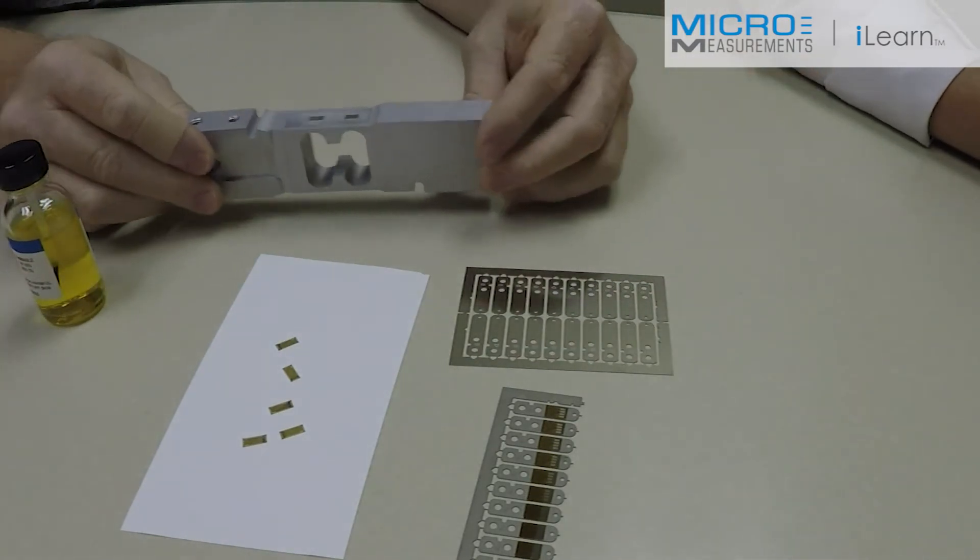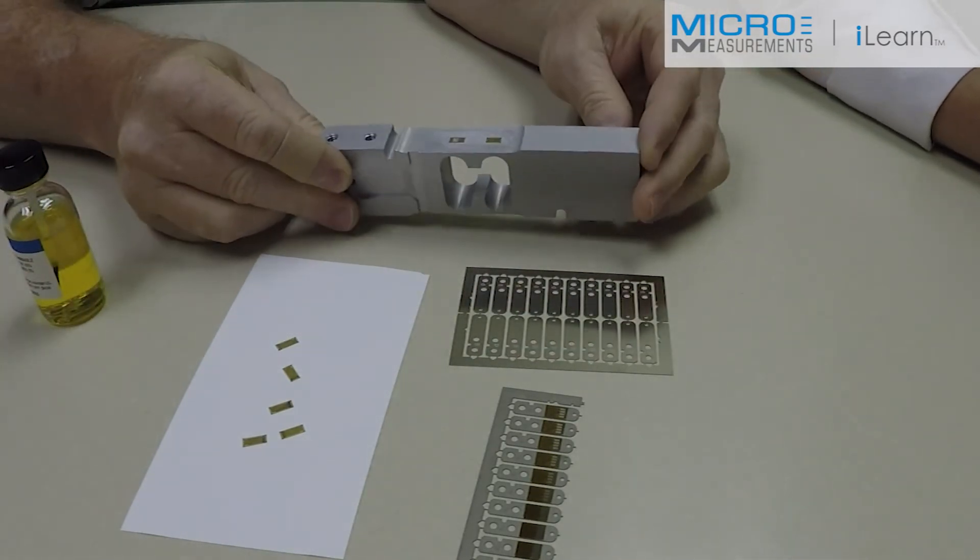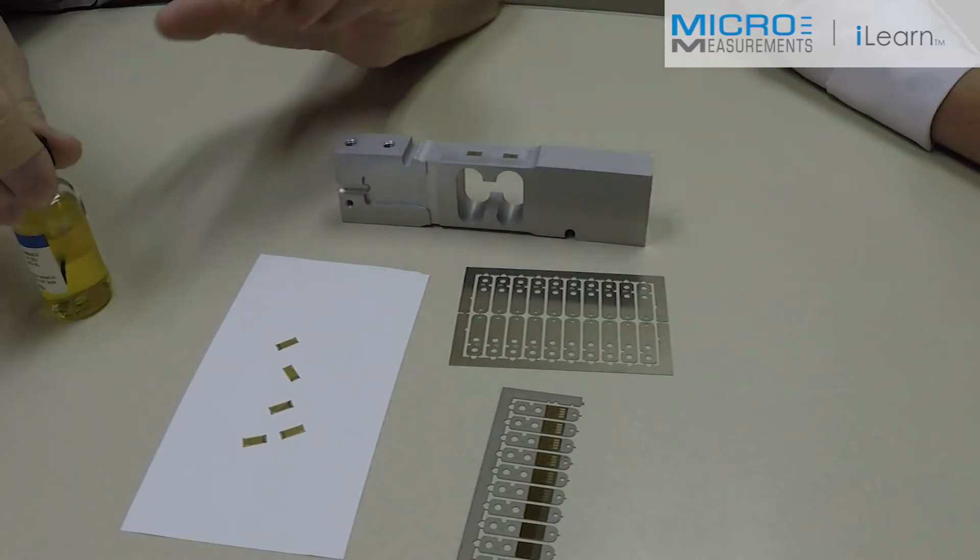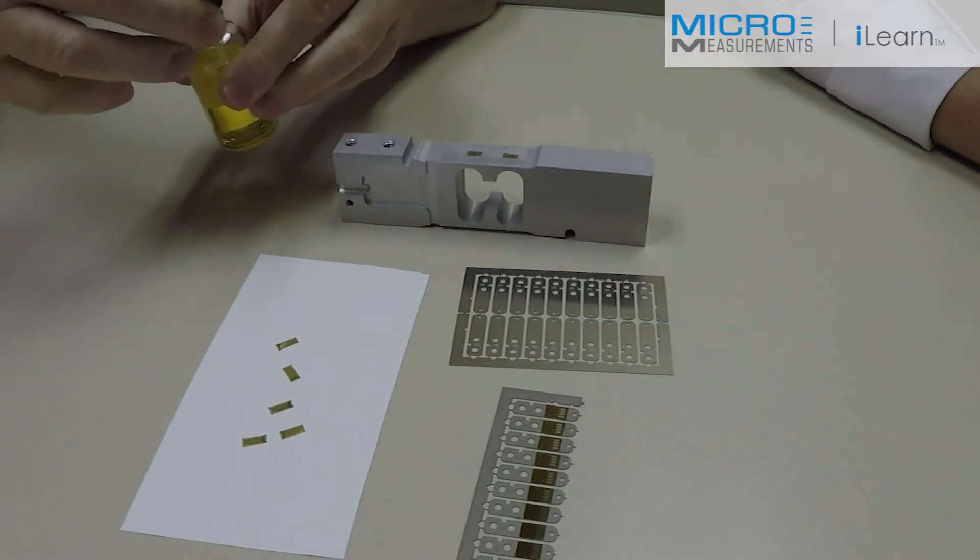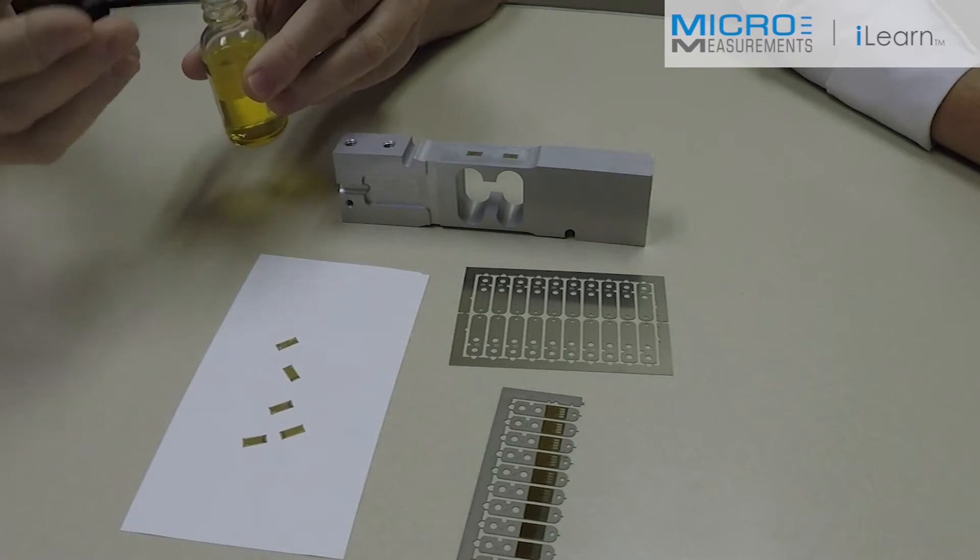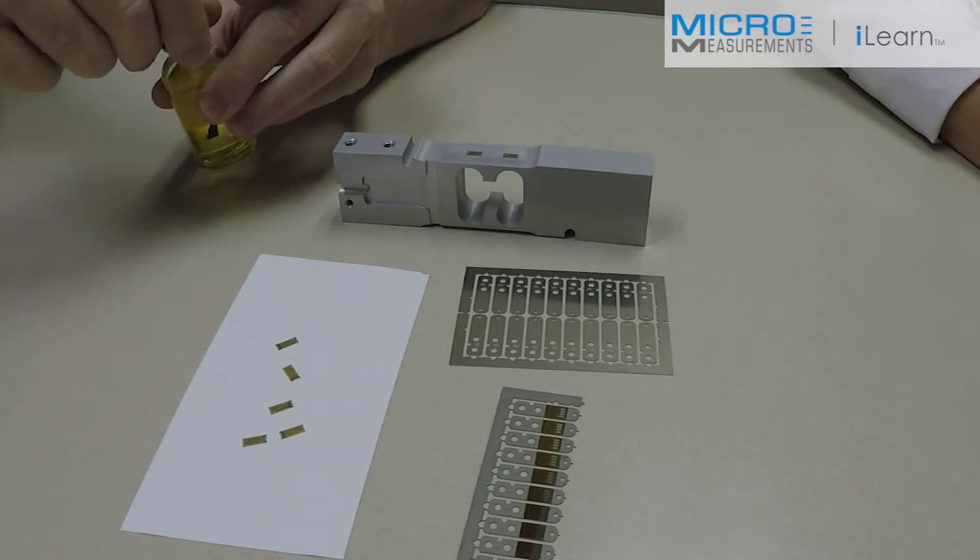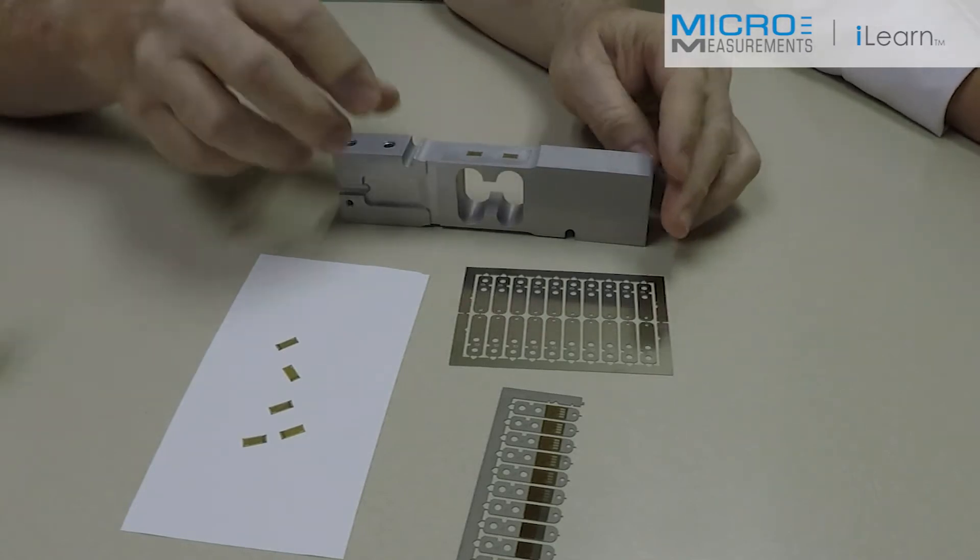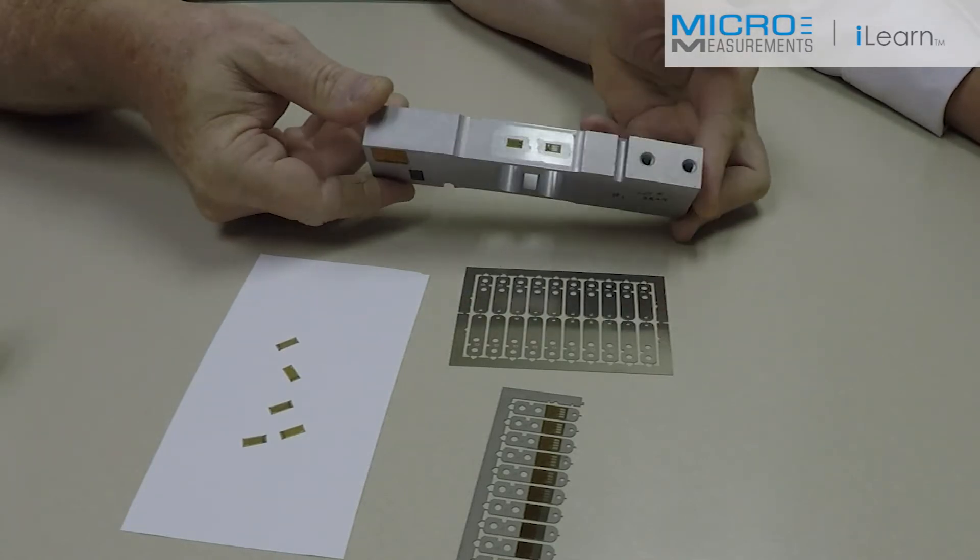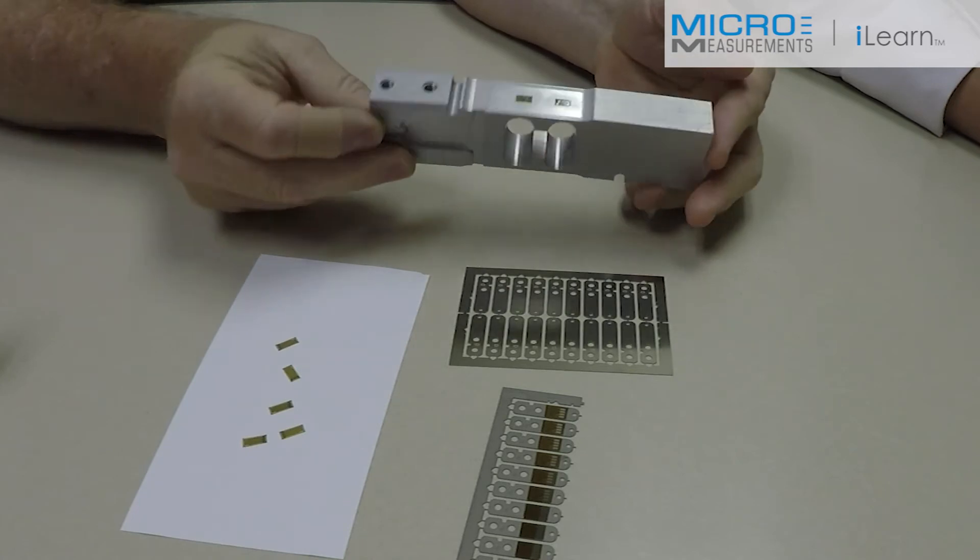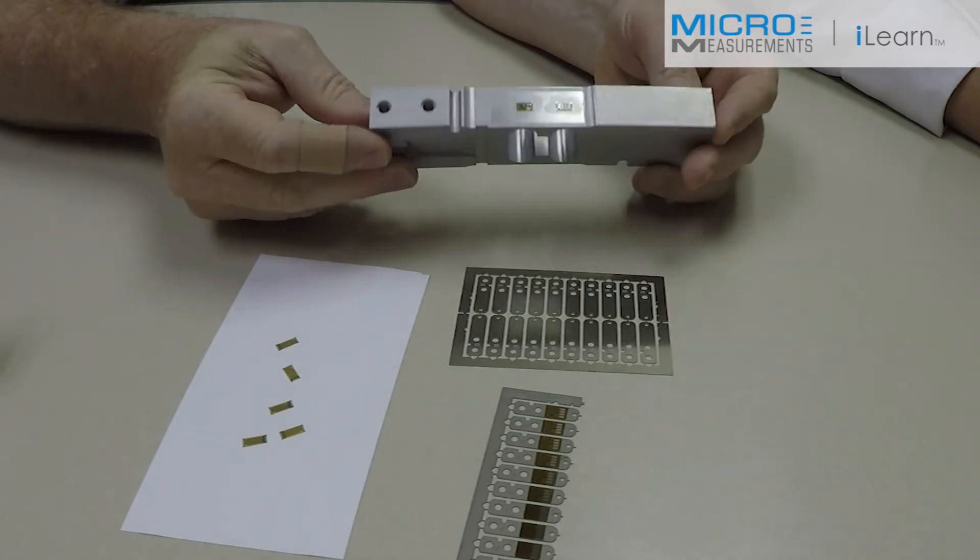Normally, a customer would take the gauge and apply adhesive using a brush similar to this to the back of the gauge, then position the gauge, tape it, and clamp it, coming up with an installation similar to what's shown on this aluminum transducer.